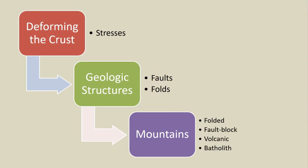Through movement along faults and/or the bending of rock underground, the crust can be pushed upwards to make mountains. Mountains are also made through volcanic activity. Four types of mountains are recognized: folded mountains, fault block mountains, volcanic mountains, and batholith mountains.